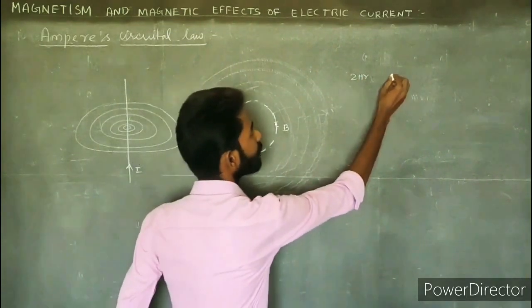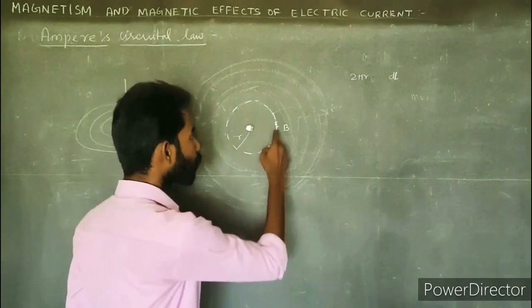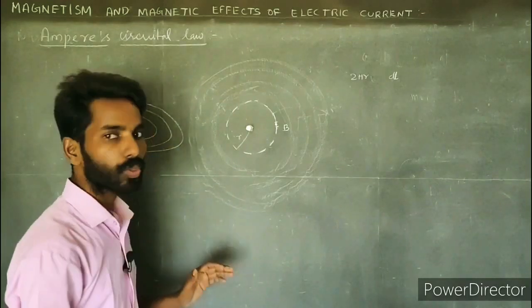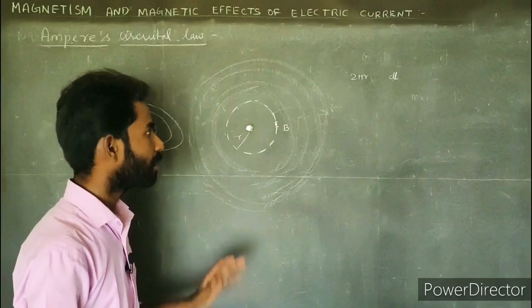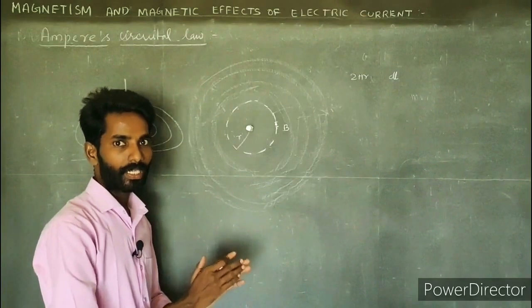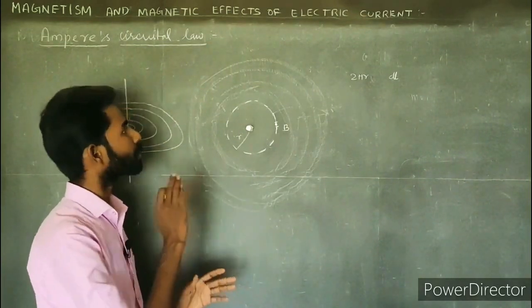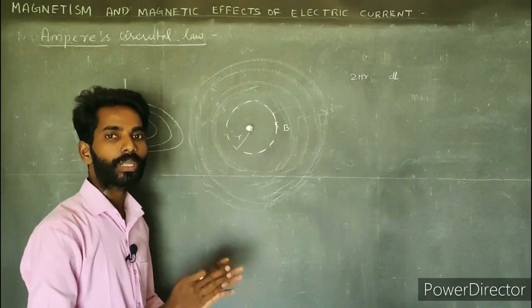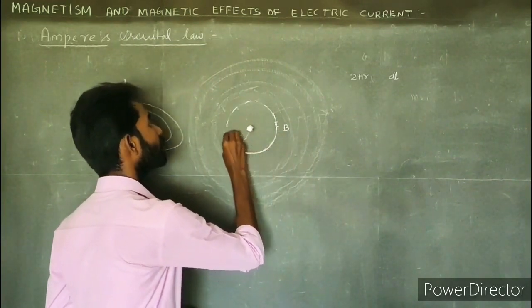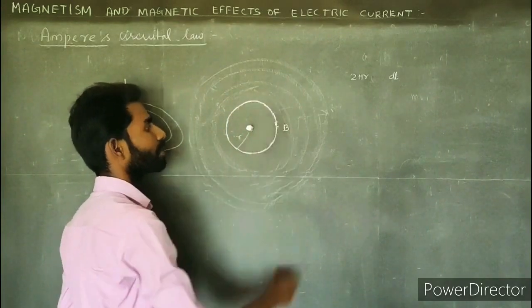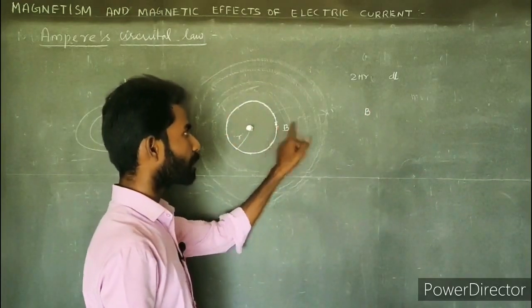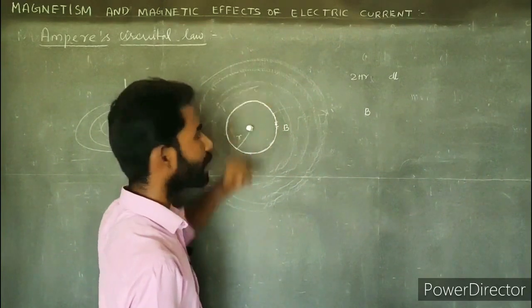This small length dl makes up the complete loop. The magnetic field B, integrated over that small length, can be related to the current. We can relate the total magnetic field to the total current — total magnetic field and total current are connected through this integral.